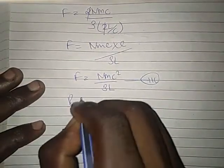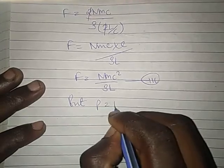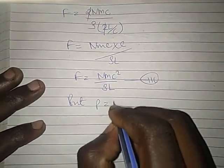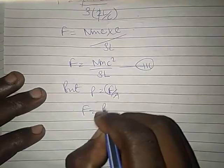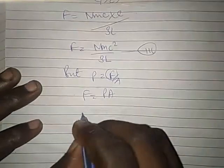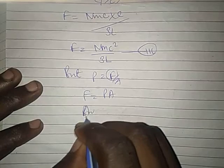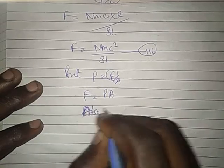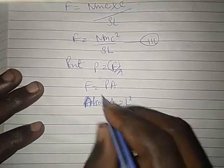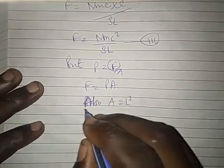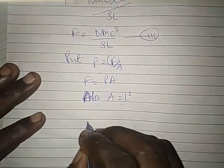But we know that pressure is force divided by area. Force equals pressure times area. Also, area equals L squared. This is one dimension. So F equals pressure times L squared. This we can call equation 4.